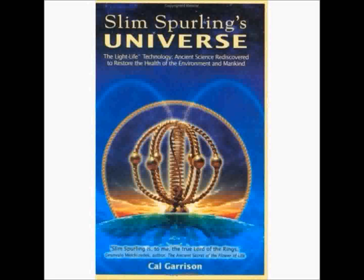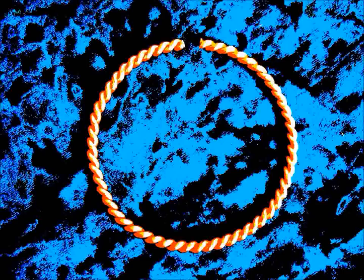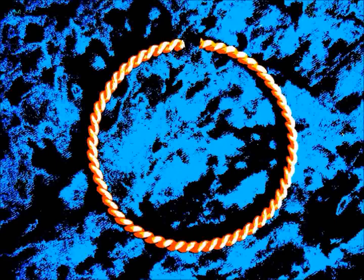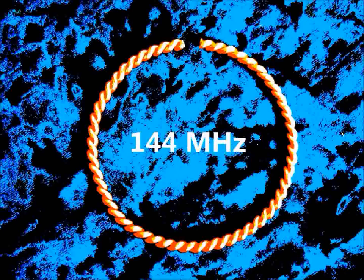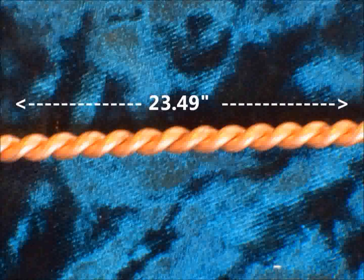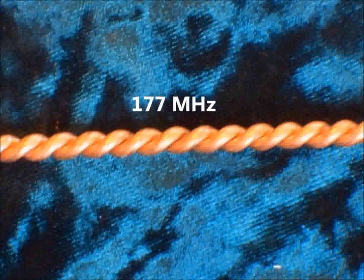Let's quickly discuss the size and frequencies of the rings. A sacred cubit is 20.6 inches in length, and rings made from the sacred cubit length emit a frequency of 144 MHz. The lost cubit is 23.49 inches in length, and rings made from the lost cubit length emit a frequency of 177 MHz.